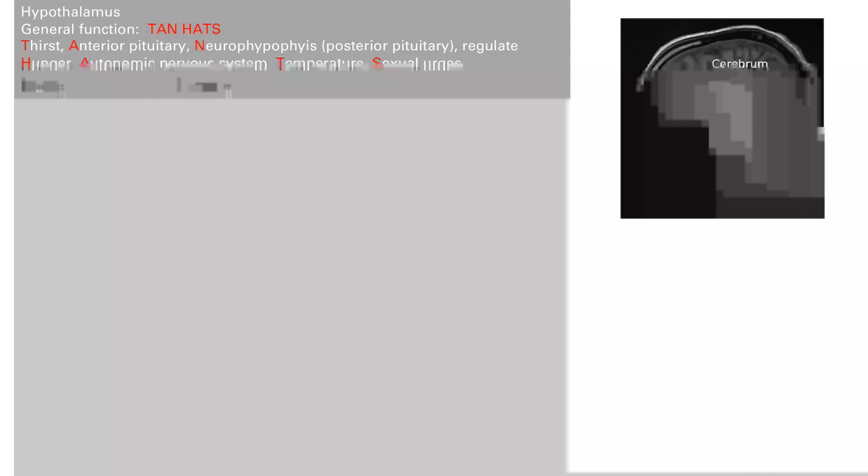TANHATS stands for: T is for thirst. A is for the anterior pituitary gland. Hypothalamus secretes hormones that stimulate the anterior pituitary gland. N is for the neurohypophysis, another fancy word for the posterior. It shoots hormones into the posterior pituitary gland. So the hypothalamus shoots hormones into the posterior pituitary gland.